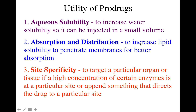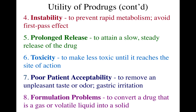You can also improve the absorption and distribution of a drug by increasing the lipid solubility to penetrate certain membranes for better absorption. We have already seen the importance of log P and log D values and the balance between lipid and water solubility. You can adjust that balance through the prodrug approach. Additionally, site specificity can be achieved to target a particular organ or tissue where high concentrations of certain enzymes are present.